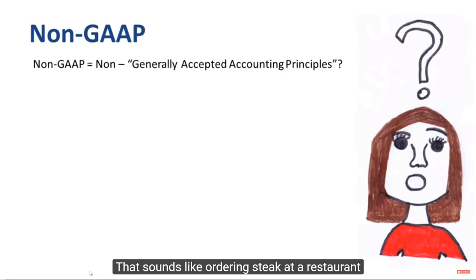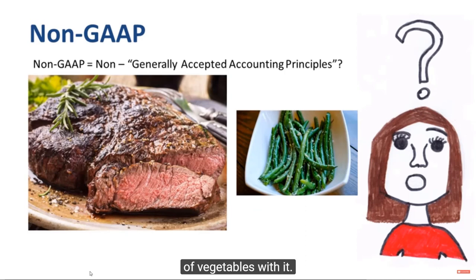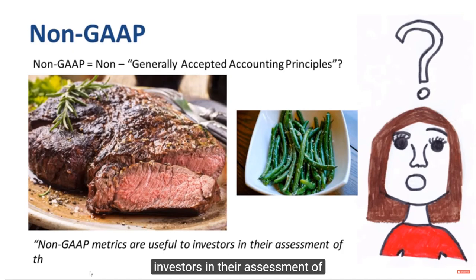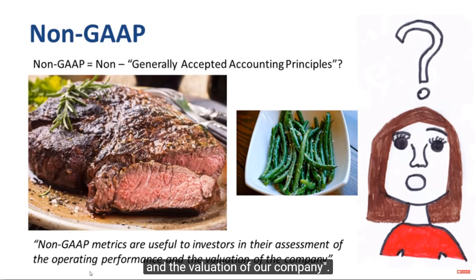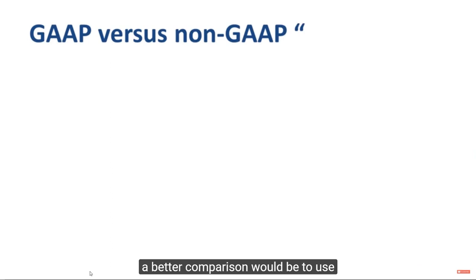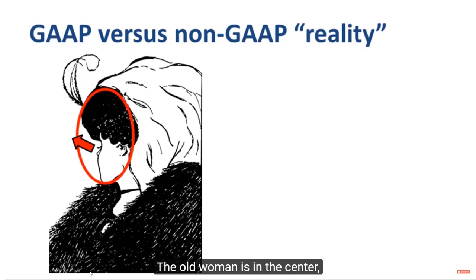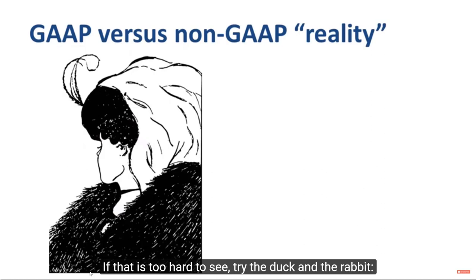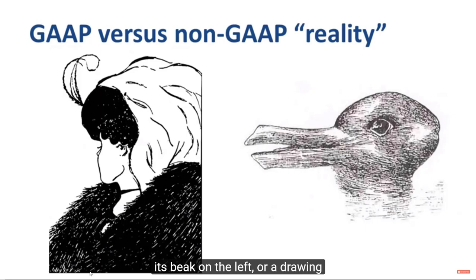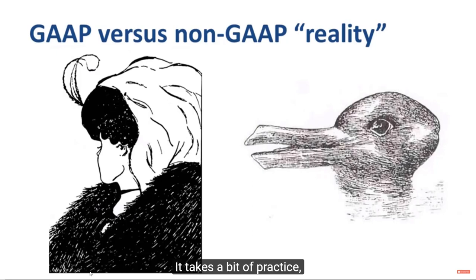That sounds like ordering steak at a restaurant and getting a free side of vegetables with it. But a better analogy is the classical optical illusion of the old woman and the young woman — do you see a young woman, an old woman, or can you see both? Similarly, the duck-and-rabbit drawing: is it a duck with its beak on the left, or a rabbit with its ears on the left? Having a company present both GAAP and non-GAAP information is very similar to being asked to spot both perspectives in these drawings. It takes practice, and some people are better at it than others.